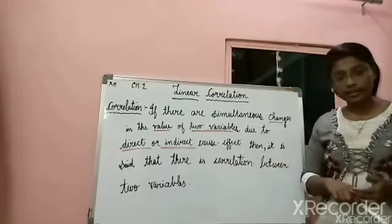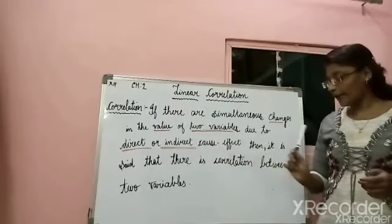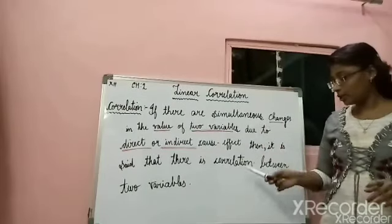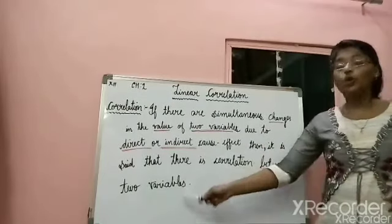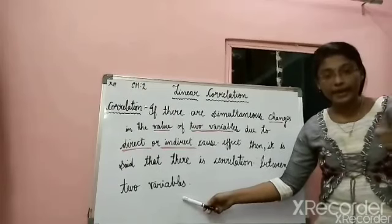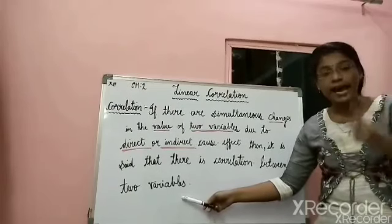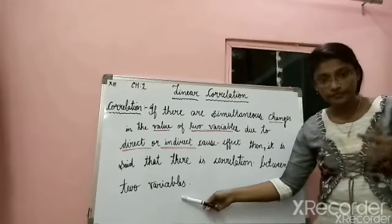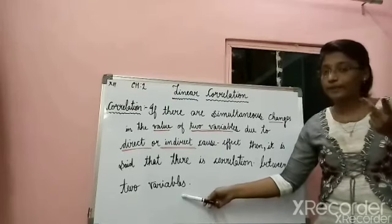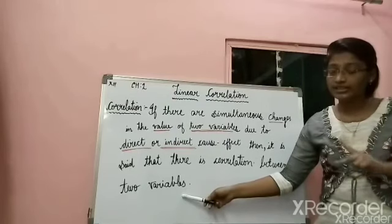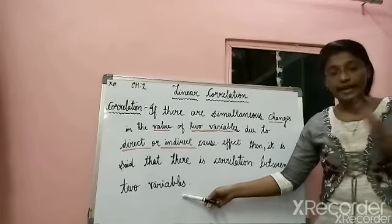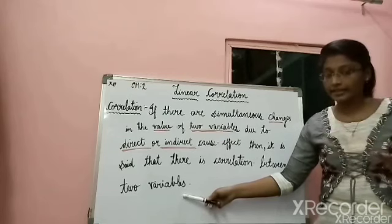So any indirect or direct cause or effect — then it is said there is a correlation between the two variables. The variables in this example are my expenses and my savings. Changes in my expenses would affect the changes in my savings, directly or indirectly.